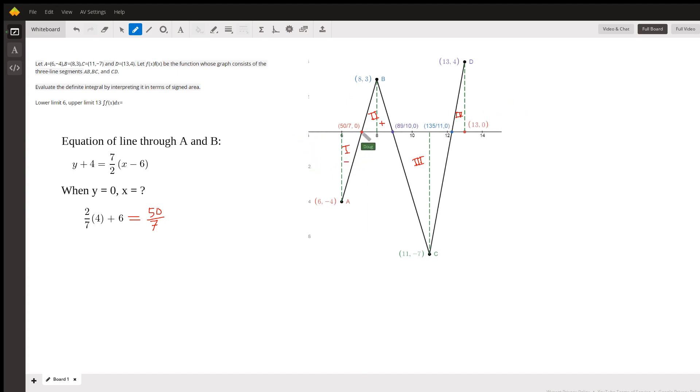Now, how did I find these points of intersection? I'll give you an example. I found the equation of the line through A and B using point-slope. The slope from A to B is 7 halves. And point-slope gives us this.